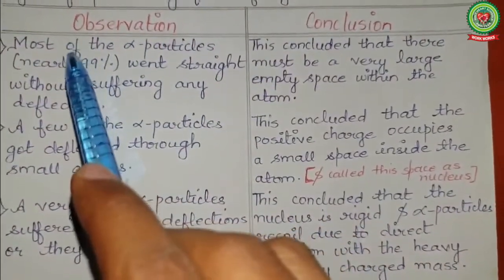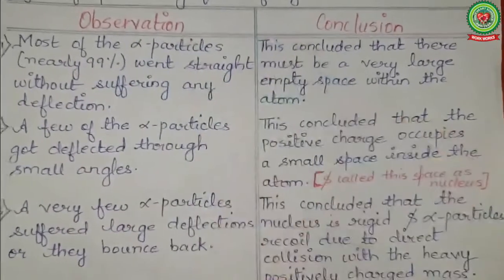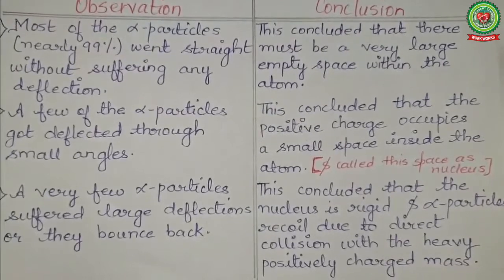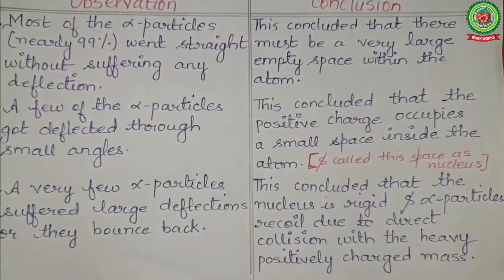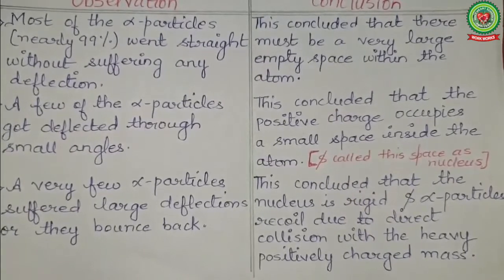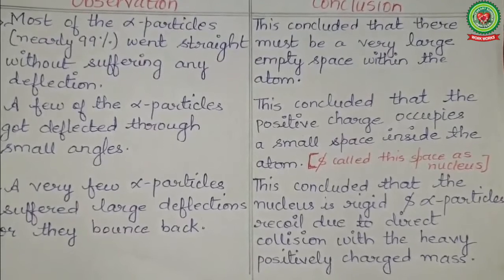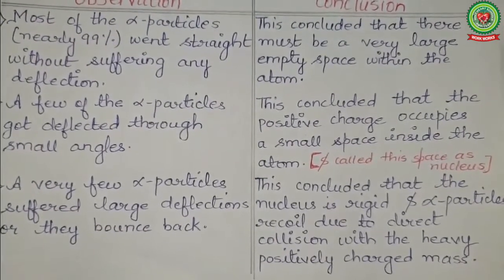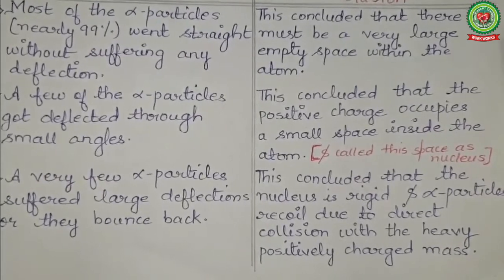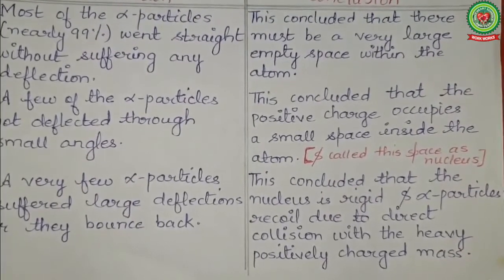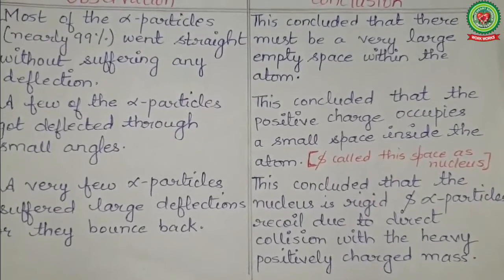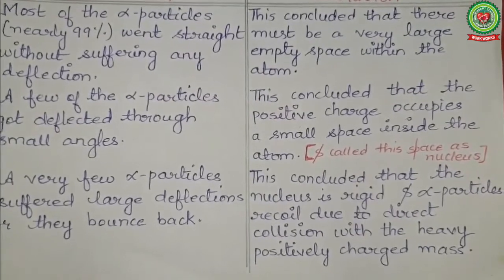From these observations, conclusions were drawn. First: since most alpha particles passed straight without deflection, there must be a very large empty space within the atom. If positive charge were spread everywhere, there would be repulsion and deviation, but most particles passed through unhindered. Second: a few alpha particles deflected at small angles, concluding that the positive charge occupies only a small space inside the atom. This small positively charged region he named the nucleus.